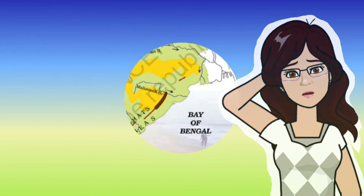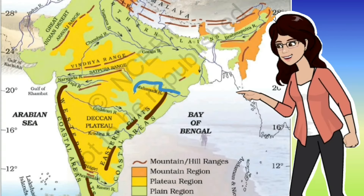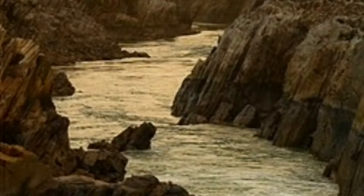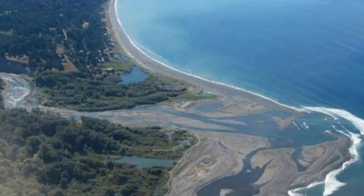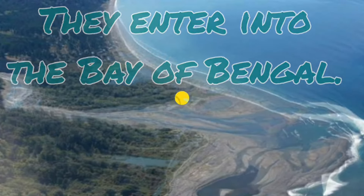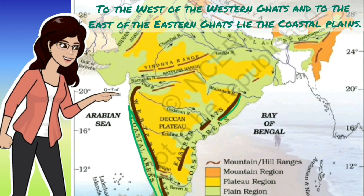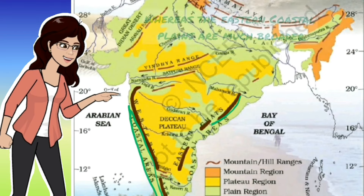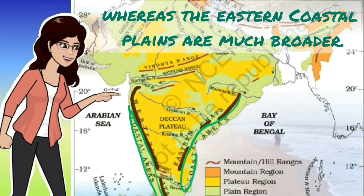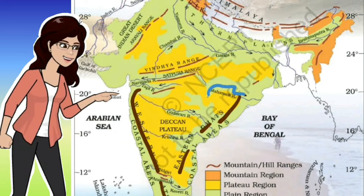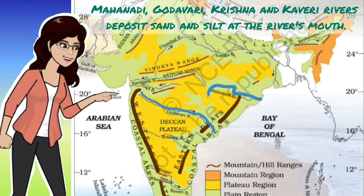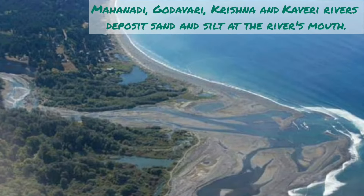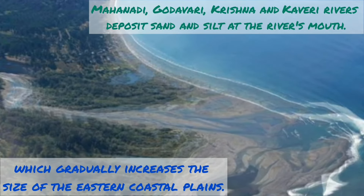The Eastern Ghats are broken and uneven because many rivers — such as the Mahanadi, Godavari, Krishna and Kaveri — pass through them, breaking the ghats as they make their way to the Bay of Bengal. To the west of the Western Ghats and to the east of the Eastern Ghats lie the coastal plains. The western coastal plains are very narrow, whereas the eastern coastal plains are much broader, because the rivers deposit sand and silt at their mouths, gradually increasing the size of the eastern coastal plains.